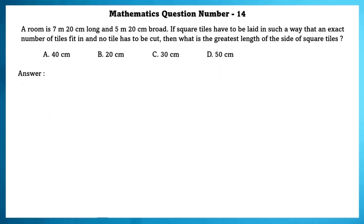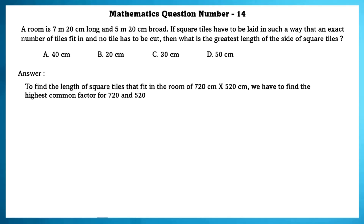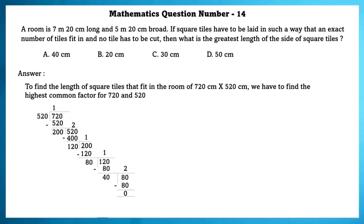Mathematics question number 14. A room is 7 meters 20 centimeters long and 5 meters 20 centimeters broad. If square tiles have to be laid such that an exact number of tiles fit in and no tile has to be cut, what is the greatest length of the side of the square tiles? To find this, we find the HCF of 720 cm and 520 cm. The HCF is 40, so 40 cm tiles can be used without cutting.